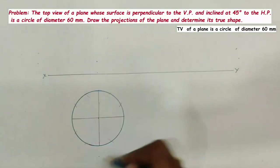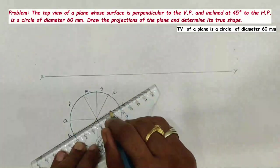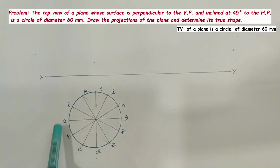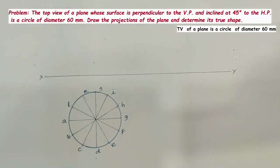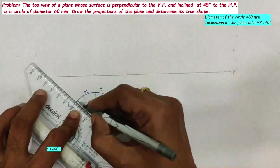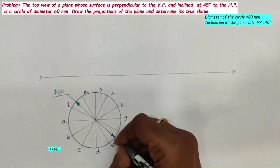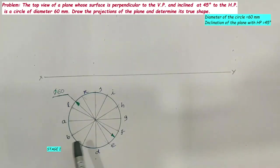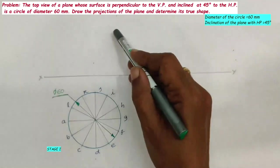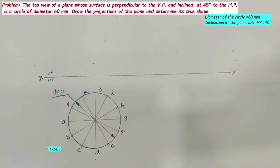Name the division points on the circle as A, B, C, D, E, F, G, H, I, J, K, and L. The diameter of the circle is 60 mm. This is the top view of a plane — a circle of 60 mm diameter — when the plane is inclined at 45 degrees to the HP and perpendicular to the VP. The next step is drawing the front view of the plane when the plane is perpendicular to the VP and inclined at 45 degrees to the HP. For that, we will draw projectors through the points A, B, C, D, etc., towards the vertical plane.